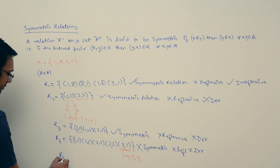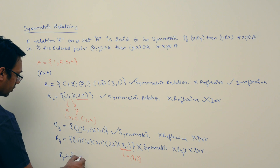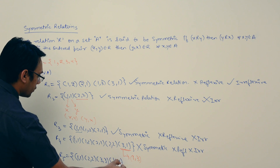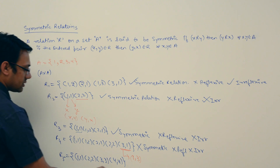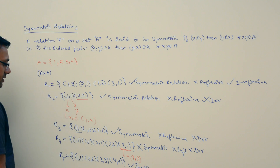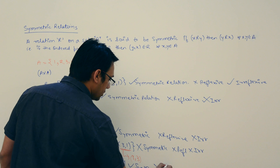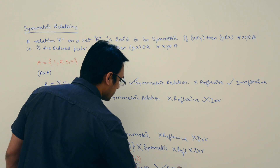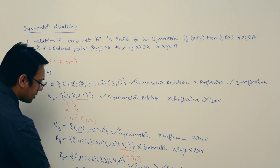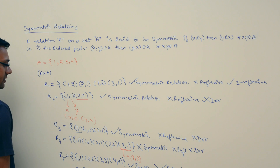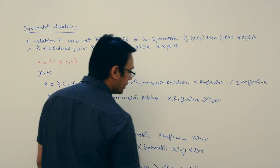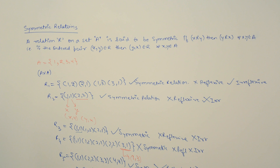If I take one more relation R5 which contains {(1,1), (2,2), (3,3), (4,4)}, this relation R5 is symmetric and it is reflexive, because it has all ordered pairs where x is related to x for all x belonging to set A. Therefore this relation is reflexive, and it is not irreflexive.